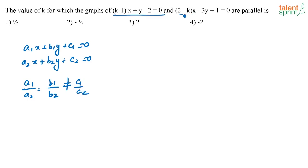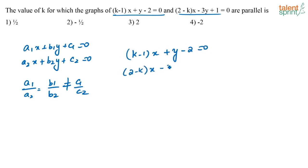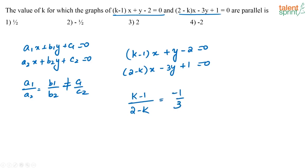For these two lines to be parallel, the condition is K minus 1 by 2 minus K equals negative 1 by 3. So I can say 3K minus 3 is equal to minus 2 plus K, or 2K is equal to 1, or K is equal to 1 by 2.